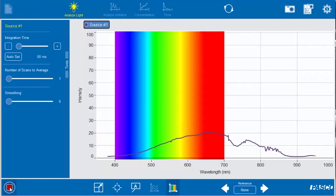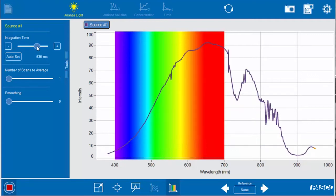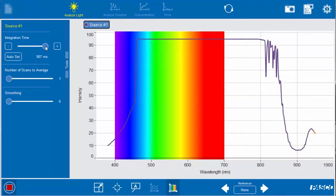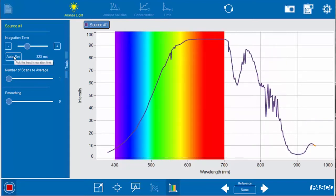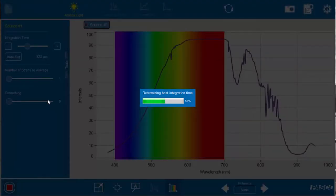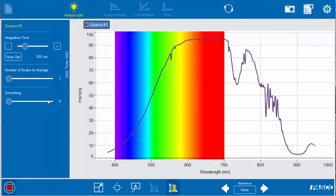When we're ready to record data, we press in the bottom left-hand corner the play button. You have a choice to either set the integration time manually—the higher the integration time, the more light it lets in, it's almost like the shutter speed on a camera—but in general you will press this button auto set and it's going to determine the best integration time for our given light source.